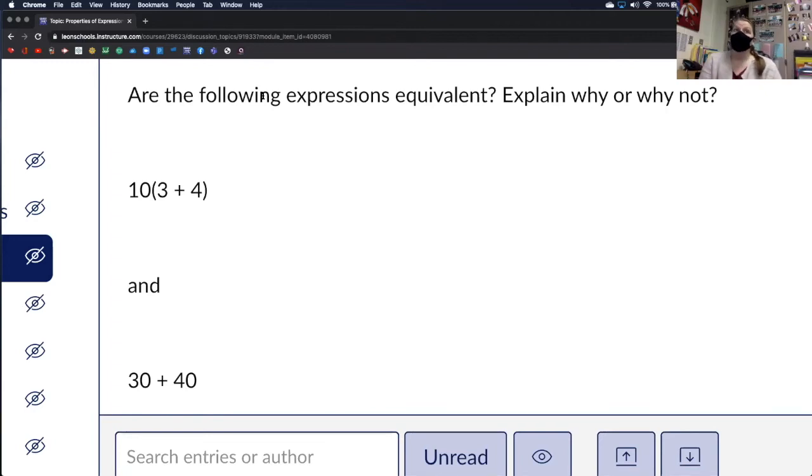Does anybody know the property that I can use to take this first one and create the second one? Troy, what do you think? Not necessarily. That wouldn't be like, like this thing is called the something property. Yes. Distributive property. Yep. The distributive property tells me that I can take this 10 and I can distribute it to everything inside the parentheses by multiplication. So 10 times 3 would be 30 and 10 times 4 would be 40 to give us 70.